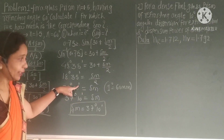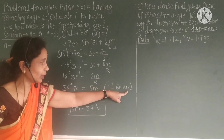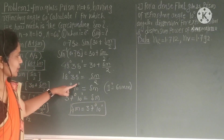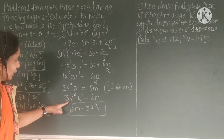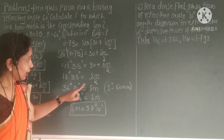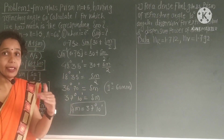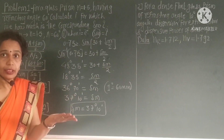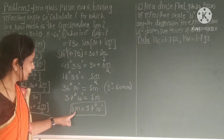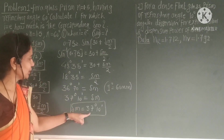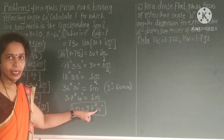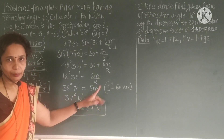Since 1 degree equals 60 minutes, 70 minutes becomes 1 degree and 10 minutes remaining. So 36 degrees 70 minutes equals 37 degrees 10 minutes. Therefore, δm is equal to 37 degrees and 10 minutes.